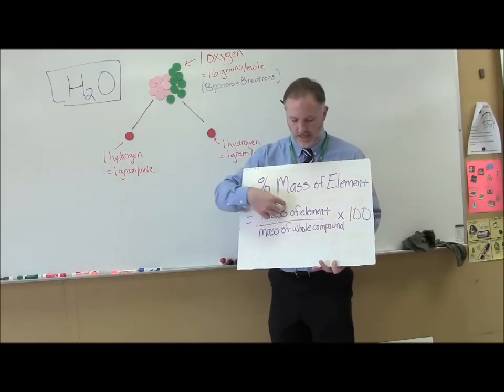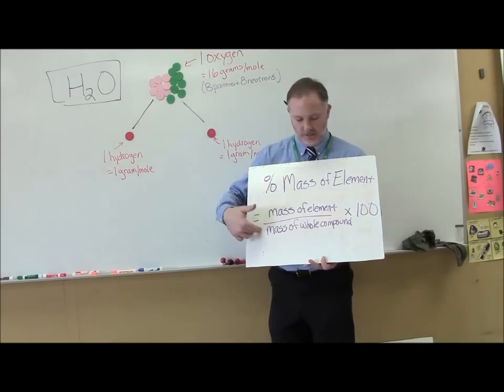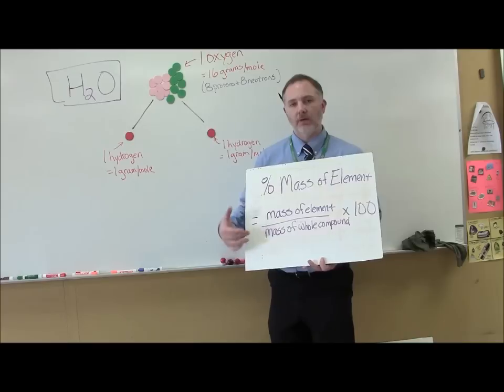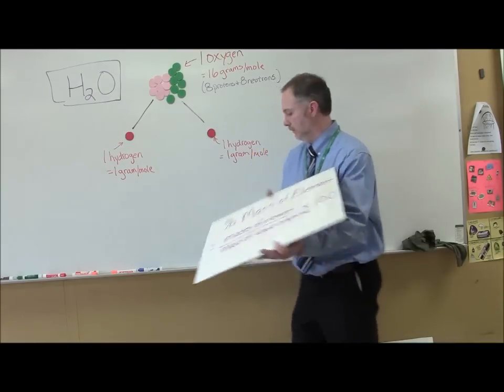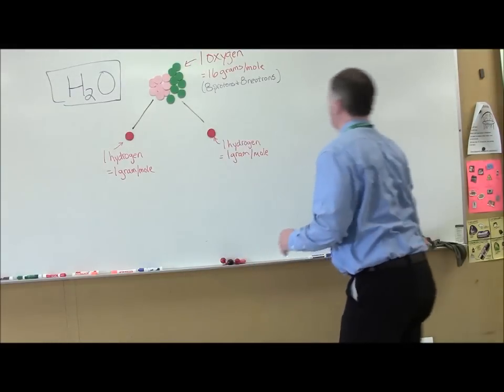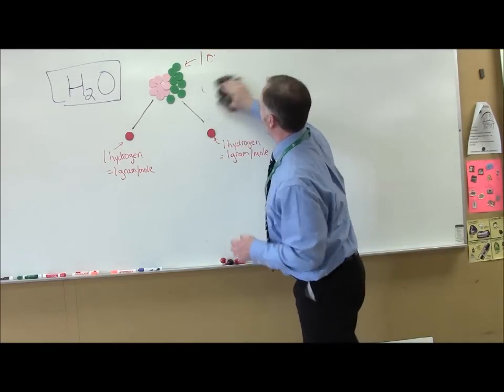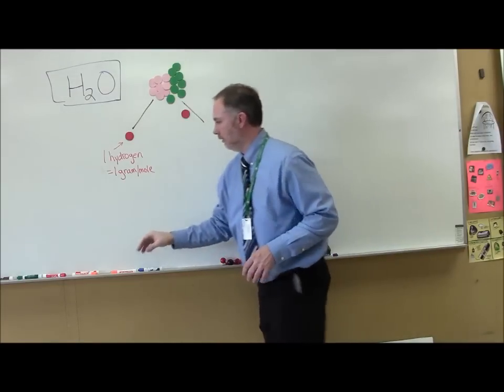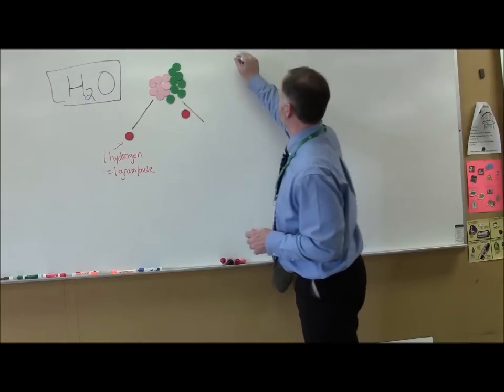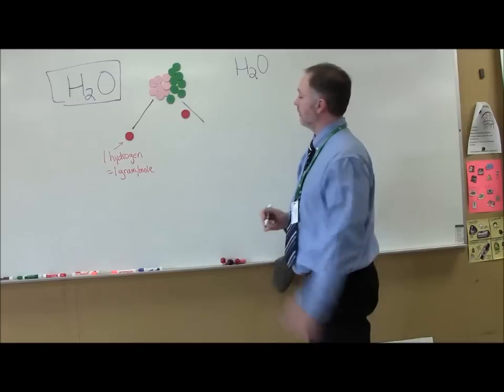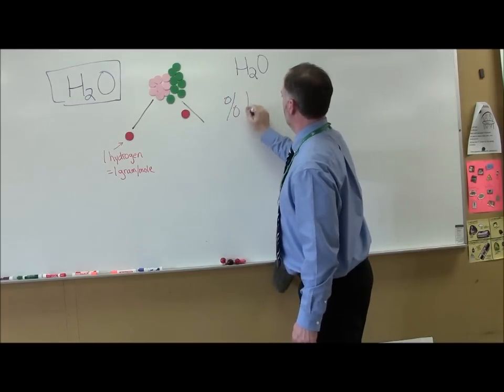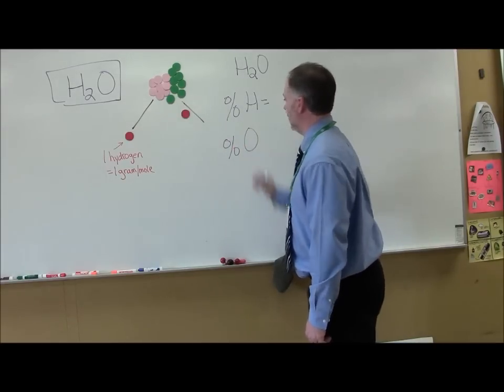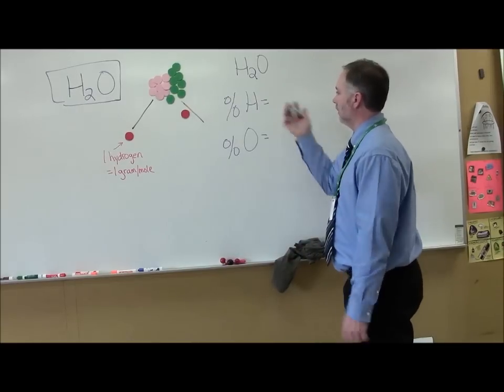So for water up here it would be my mass of my hydrogens divided by the mass of the whole compound which is water. And then also my mass of my oxygen divided by my mass of the whole water. Let me show you. I'm going to erase this right here. And now here's what we're going to do. We have H2O. I need to find the percent composition of H2O. I need percent hydrogen equals and my percent oxygen equals. This right here is what I'm looking for.